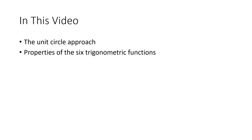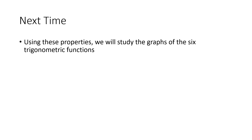So in this video we talked about the unit circle approach — it's a way to be more definitive about what point corresponds to our angle. Rather than choosing any point on the terminal side, we specifically choose the point one unit from the origin. We also talked about several properties of the six trigonometric functions. Next time, we're going to use these properties to create graphs of the six trigonometric functions, going through sine and tangent in great detail and then showing the similarities with the other four.